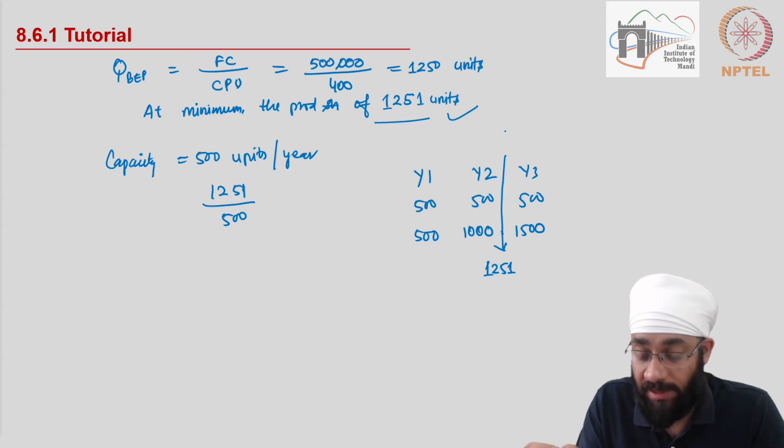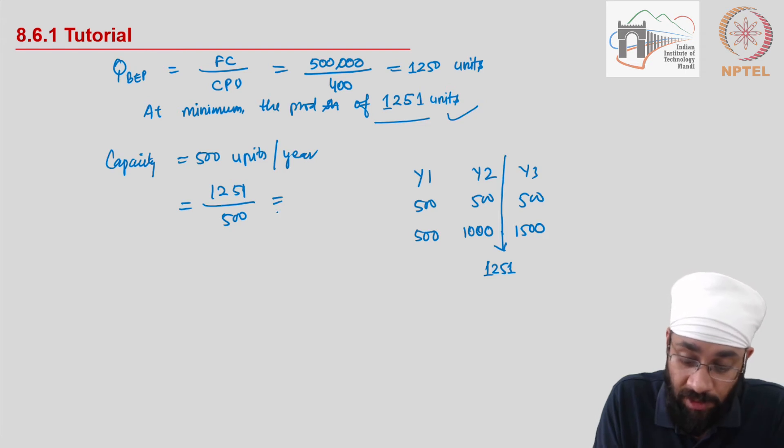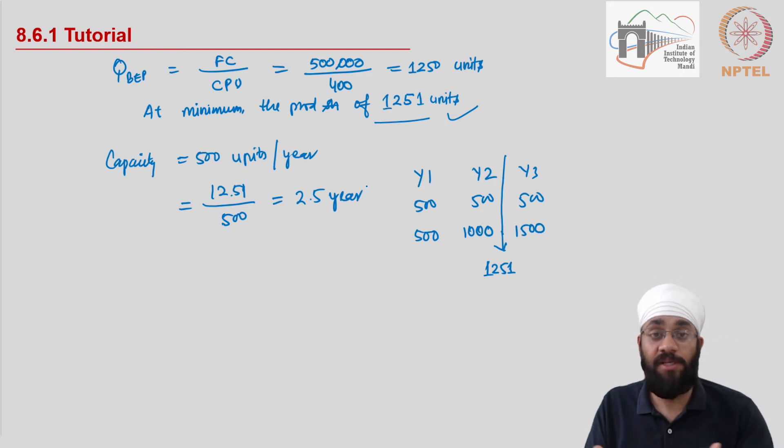So clearly it is minimum 2 years but less than 3 years. If you want to figure out exactly how much time, then you do the numbers here which come out to be 2 point something. So this is 2.5 years. So approximately 2 years and 6 months is the time that Anil would need to break even, to reach at this break-even level because the production capacity is limited.